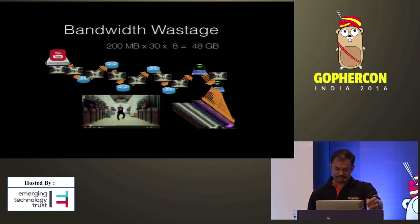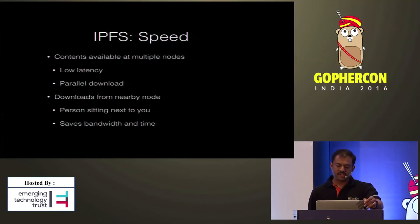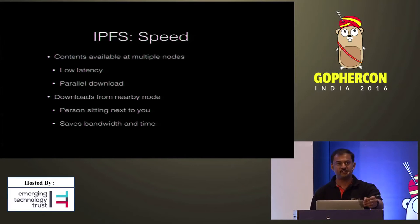IPFS tries to solve this. In IPFS there is no distinction between client and server, and content is available at multiple locations. A node can retrieve content from any node — it could be a nearby node. This not only reduces latency, but also allows us to download content in parallel. So practically whenever we download content in IPFS, it could come from any node — even from the person sitting next to you. This saves quite a lot of bandwidth and time.